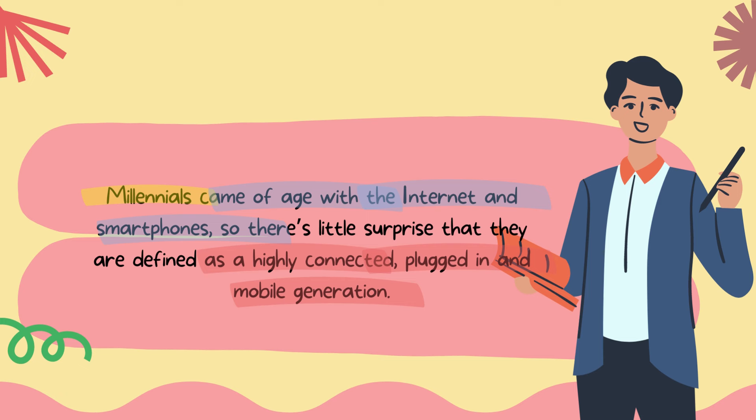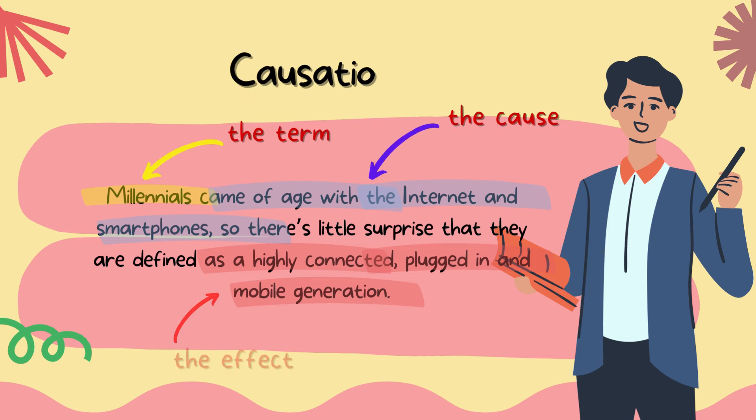Meanwhile, causation explains the causes and effects of the term. Let's take a look at this example: Millennials came of age with the internet and smartphones, so there's little surprise that they are defined as a highly connected, plugged-in, and mobile generation.